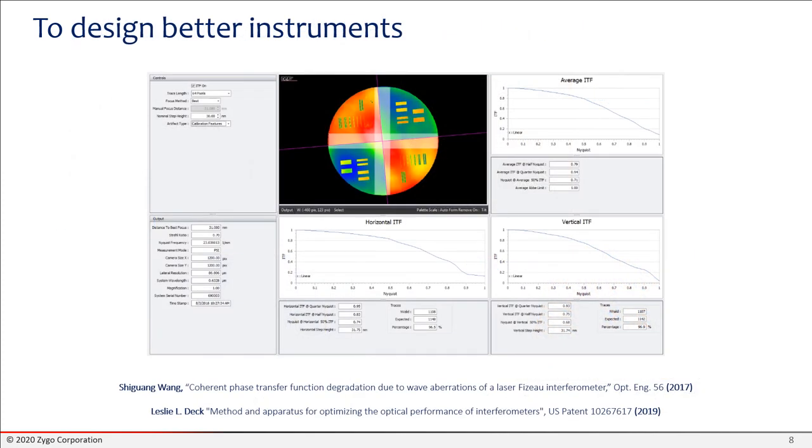You also would like to do modeling to design and build better instruments. So we do a lot of this. Shiguan Wang and Les Deck at Zygo have developed a number of ways to characterize instruments and predict their behavior, optimize the optical design based on instrument transfer function and other tools that characterize response. So modeling the interferometer using Fourier optics and other techniques is certainly important for that.